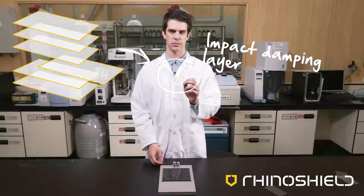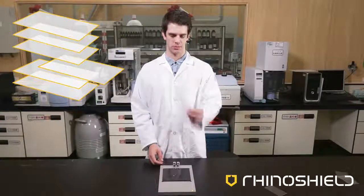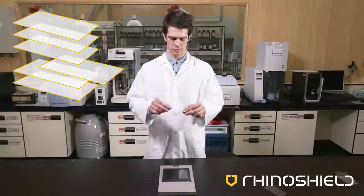As you can see, the layer absorbs the impact of the steel ball bearing and reduces the rebound height significantly.